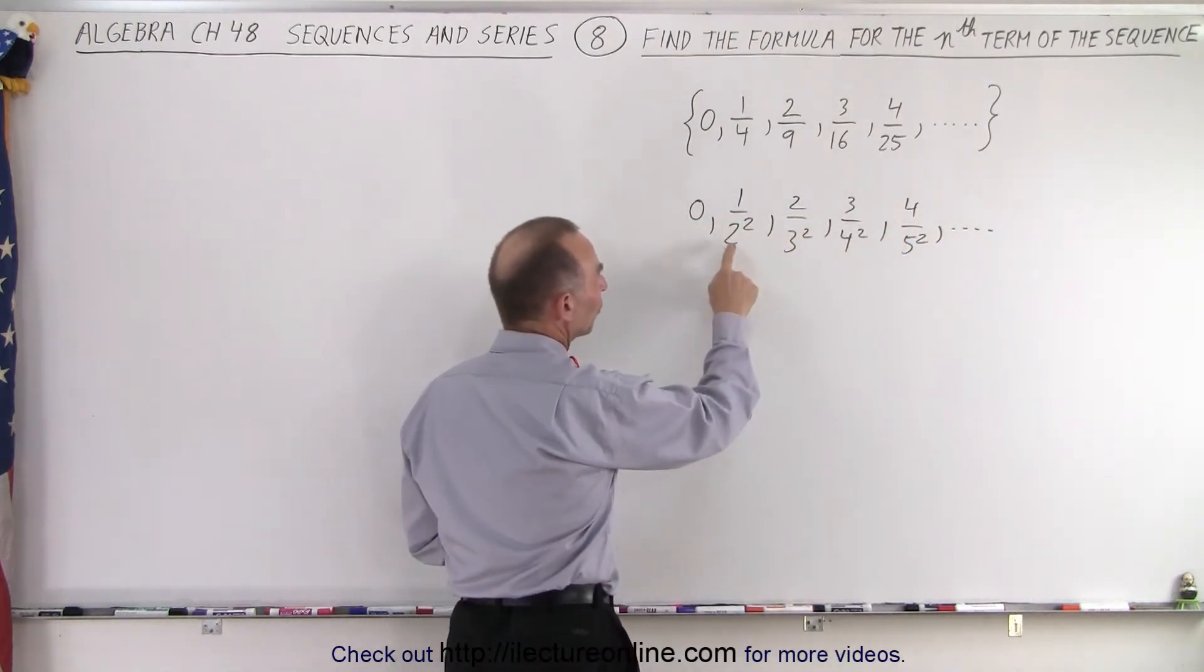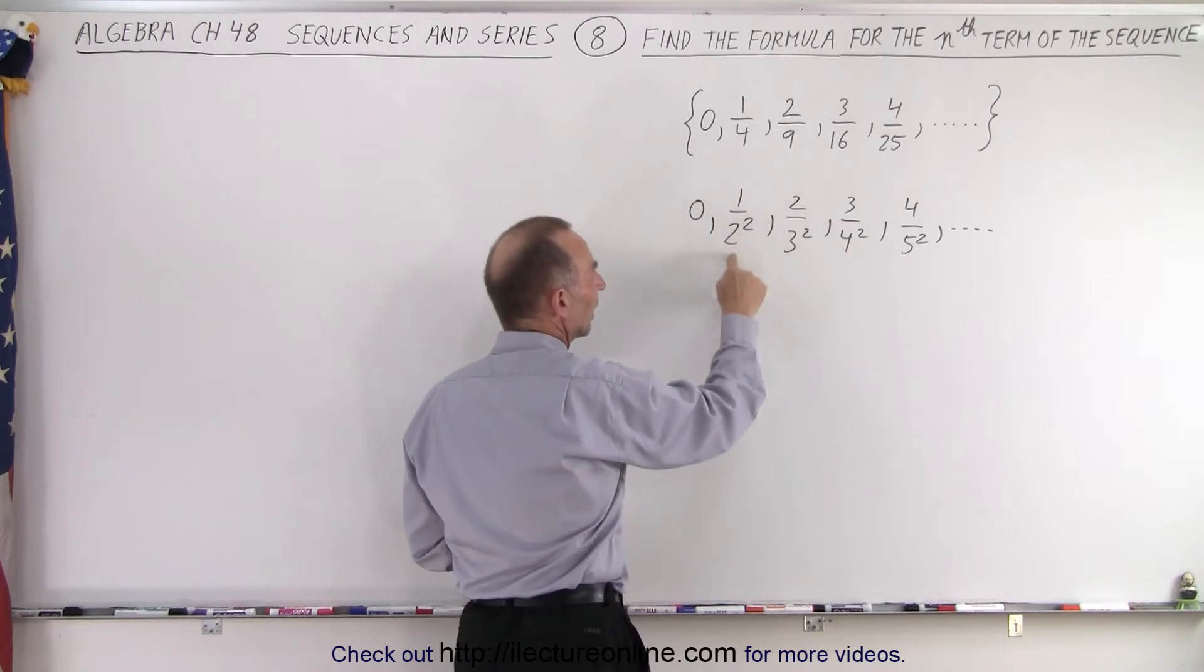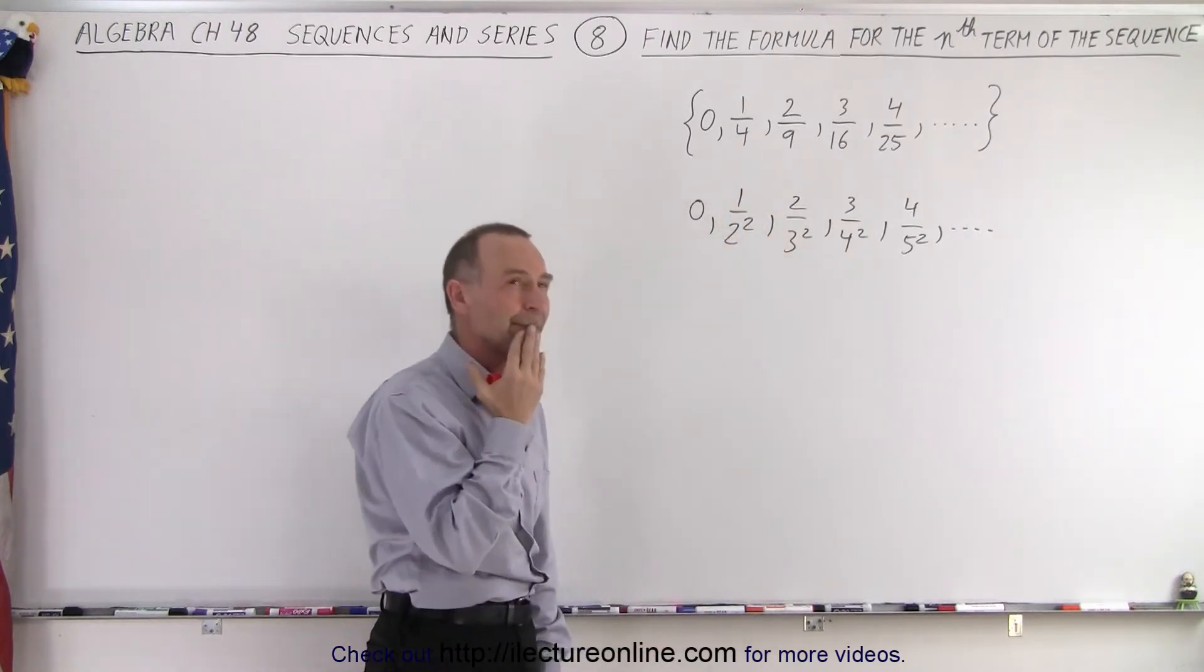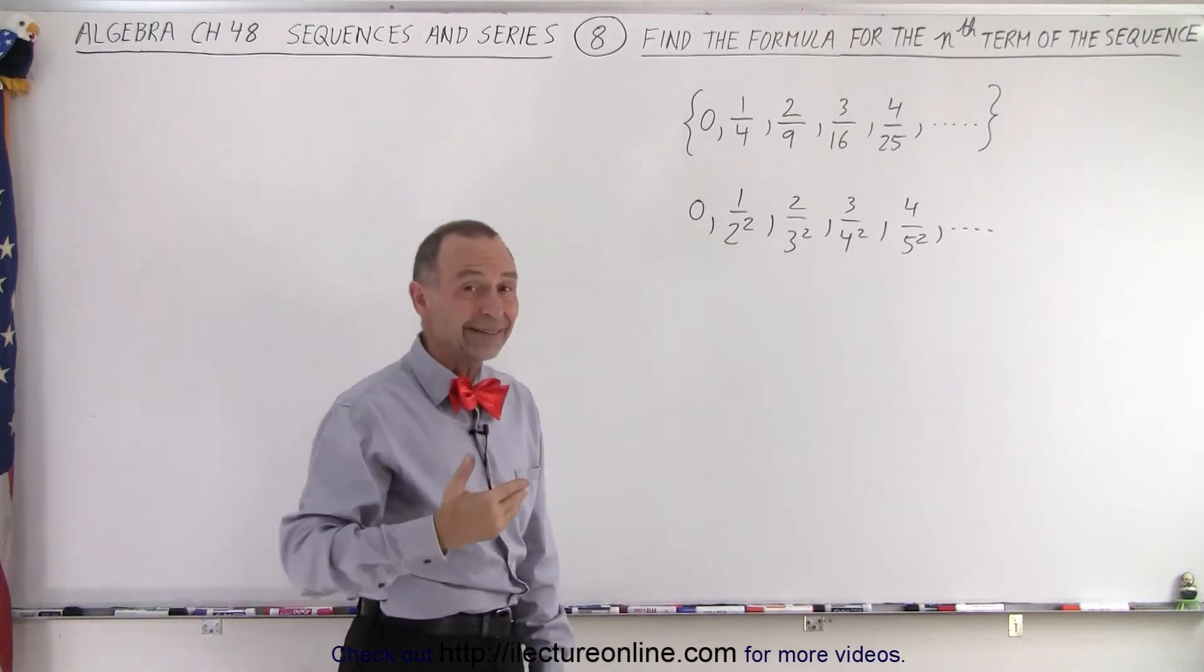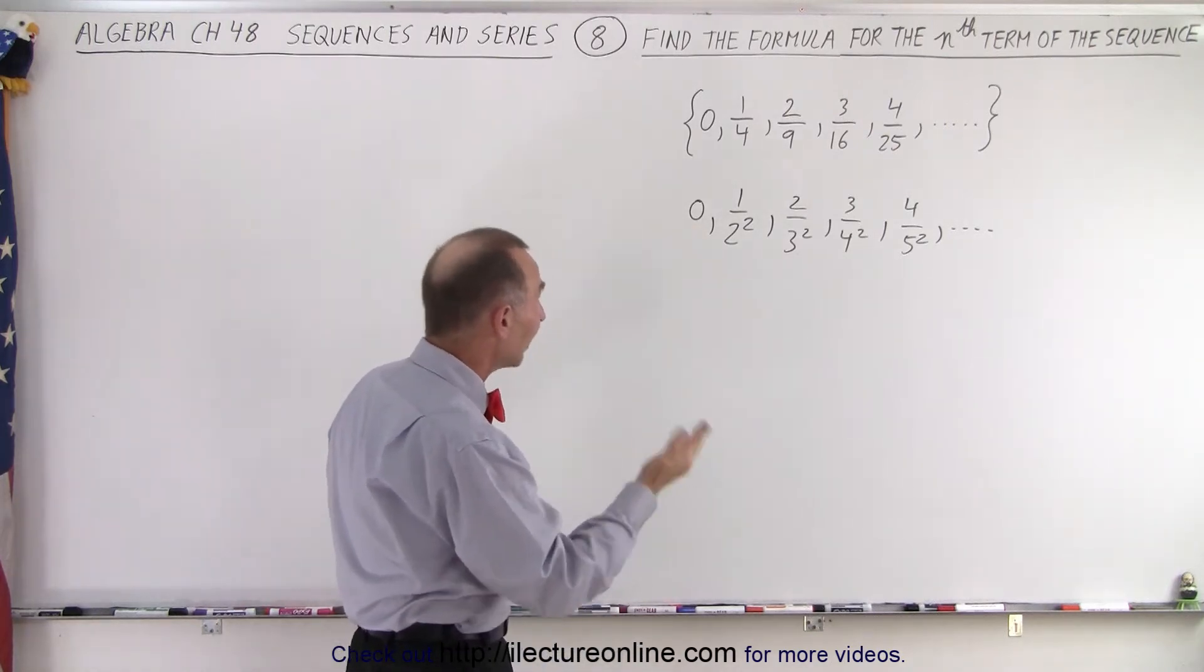Notice that in the denominator the number is 1 bigger than the numerator. It is also squared. And notice that it starts at 0, not at 1. Typically, sequences would start at 1, not at 0.